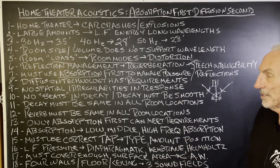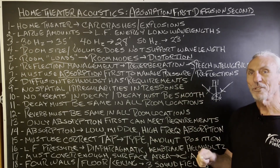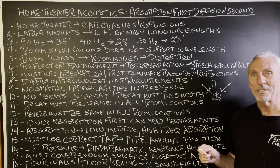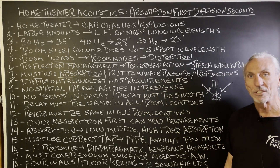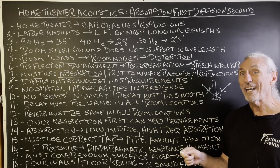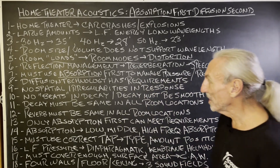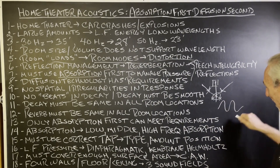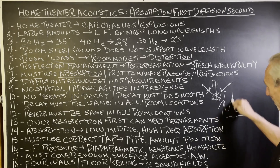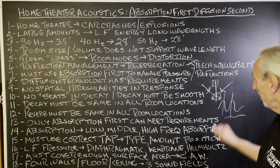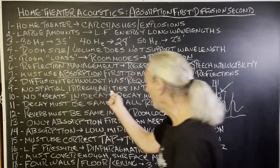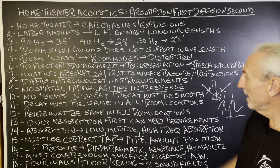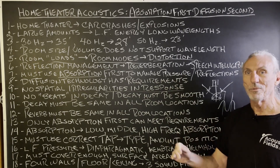Diffusion technology has requirements. Diffusion is a tool that is very specific in its application — it's a wonderful tool we've been using for 30-plus years, but it took us a long time to figure out how to use it correctly. One of the first requirements is no spatial irregularities in frequency response. You want smooth frequency response — no peaks and dips. It takes a lot of surface area coverage, and the decay rate must be smooth. Everything has to be smooth when you're using diffusion.